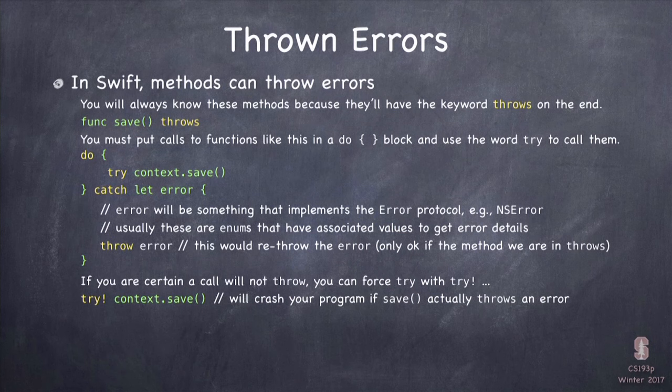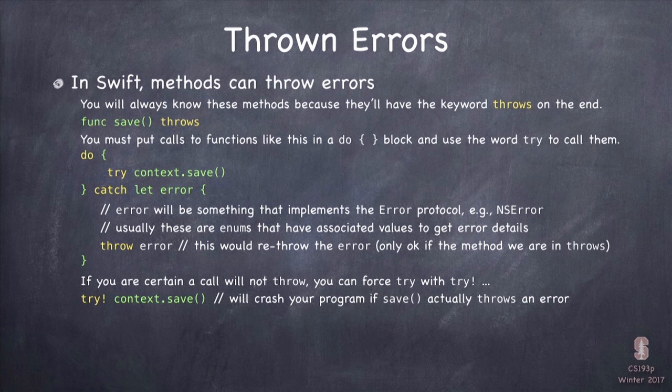Sometimes we call a function that throws and we know for sure it's not going to fail — this is rare. But if we're certain about it, we can use 'try!'. Just like '!' means to force it in an optional, '!' here means to force it. If we call it and it throws, our app will crash. That's what 'try!' means: try, I know this is not going to throw — if it does, crash my app.